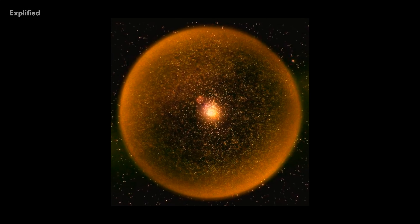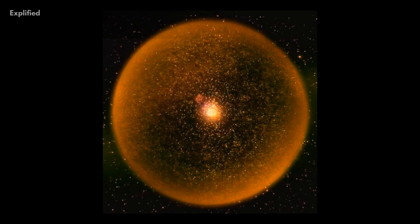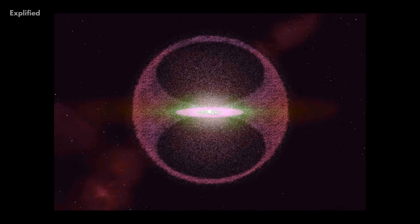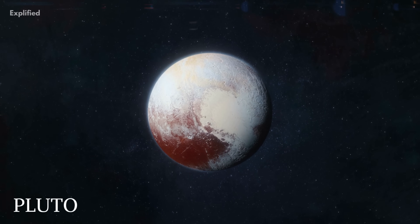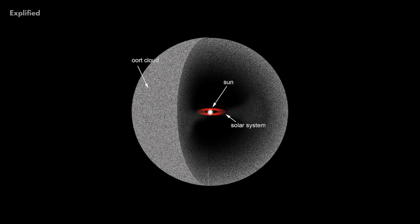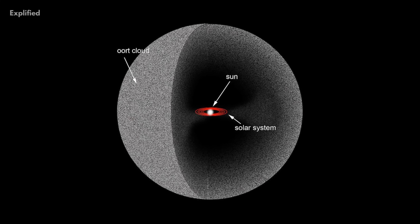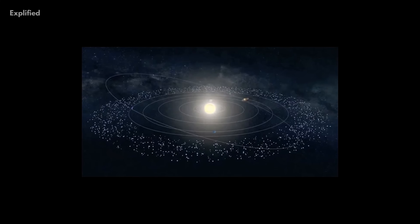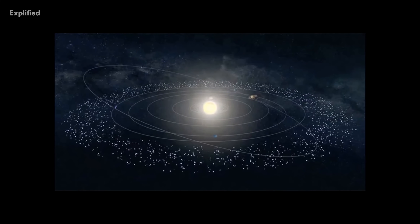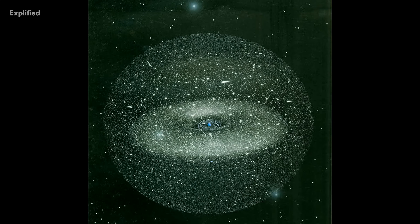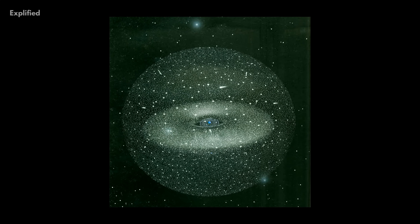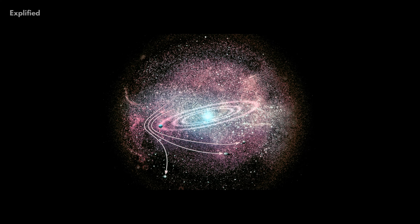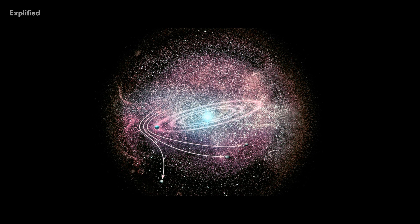The Oort Cloud lies way beyond the Kuiper Belt. It is the most distant region of our solar system and is located beyond the dwarf planet Pluto. It is like a spherical shell filled with icy objects and space debris. Unlike the Kuiper Belt, the Oort Cloud surrounds the Sun. There is no real number for the amount of objects present in the Oort Cloud, as they could range from billions to trillions.